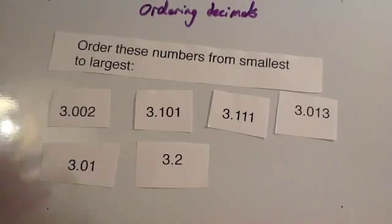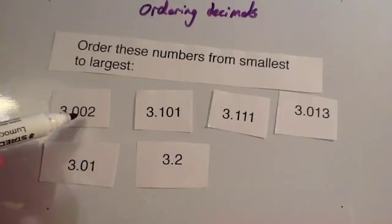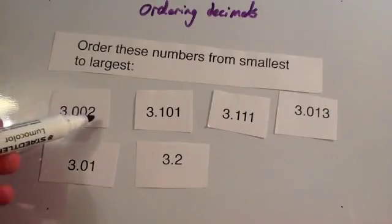So what we're going to do is, I recommend, making all the numbers the same length. So the longest one has got three decimal places. So three numbers after the decimal point.